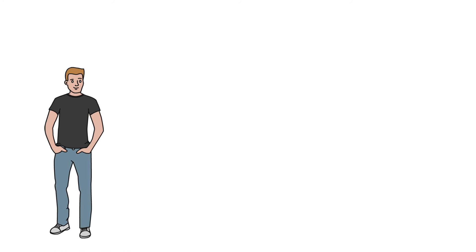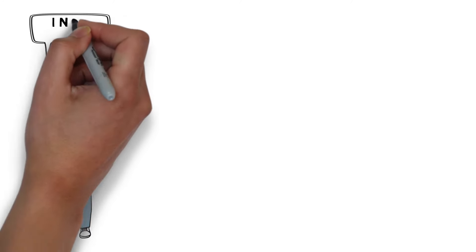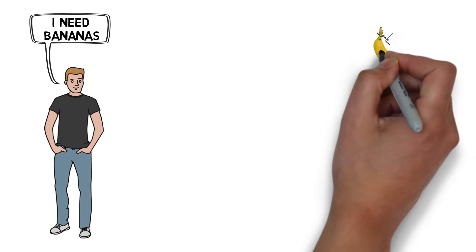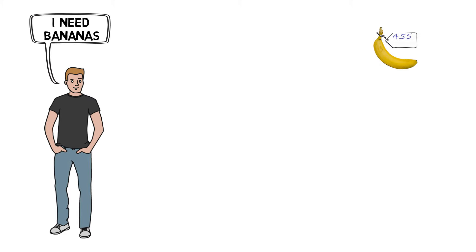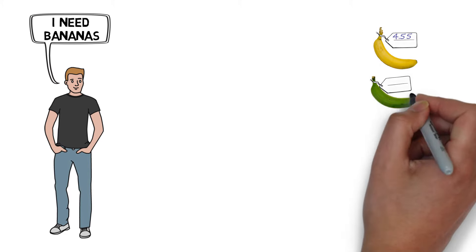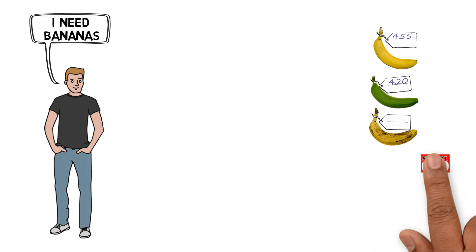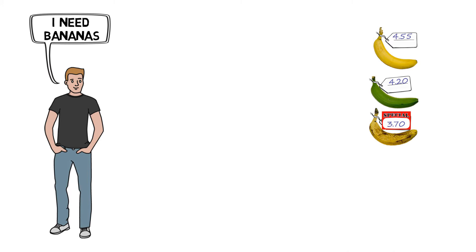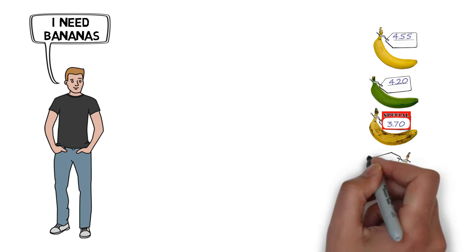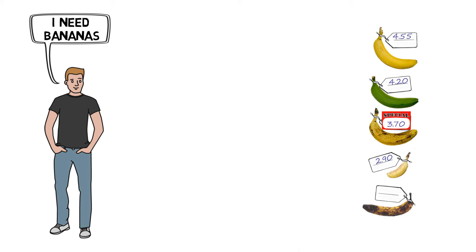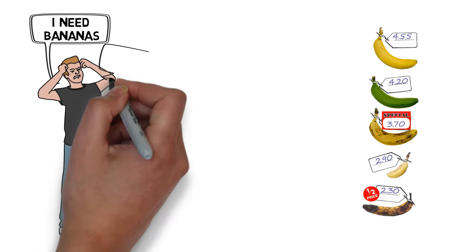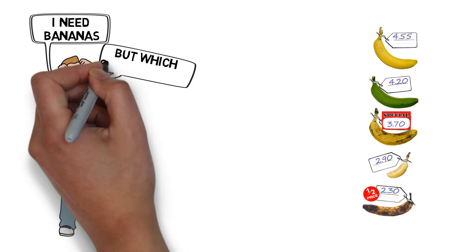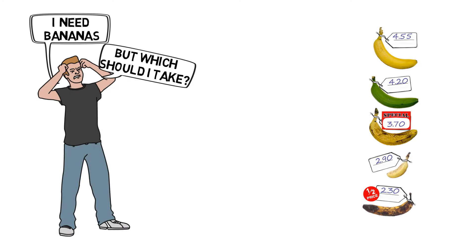You want to know how multi-criteria decision analysis works? Just imagine you've been asked to buy fruits for the whole family, and you're looking for bananas. You go to the fruit store, and there are all kinds of different bananas: very yellow ones, green ones, ripe bananas, small bananas, and those which should have been eaten yesterday. Which one should you choose?